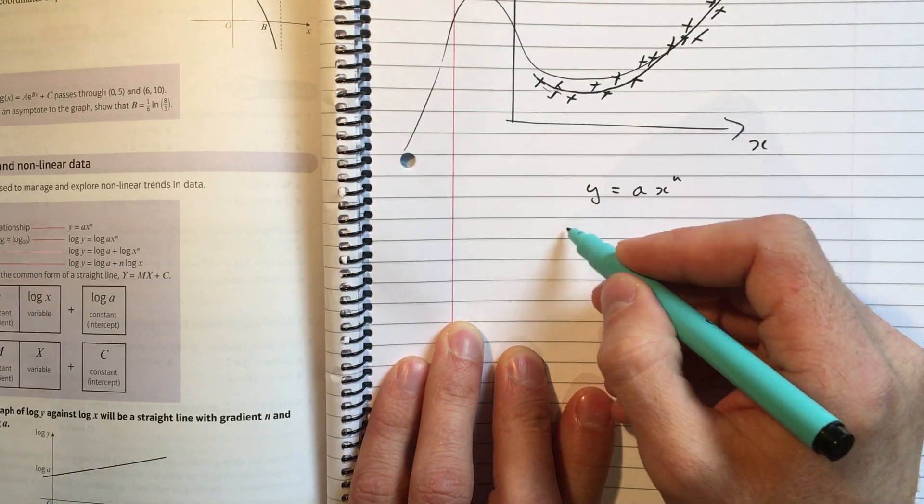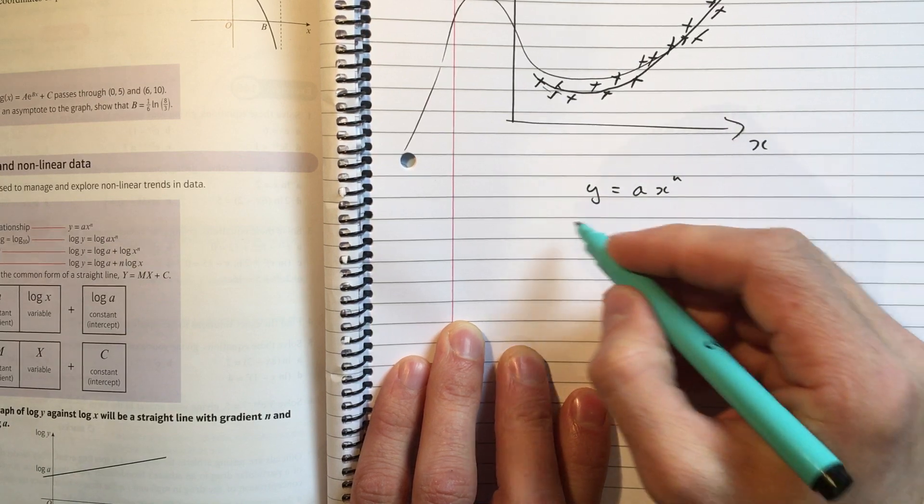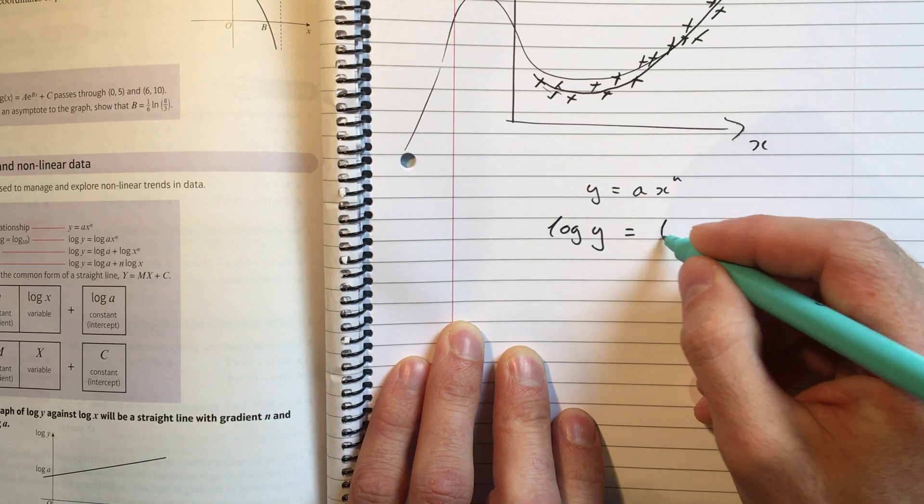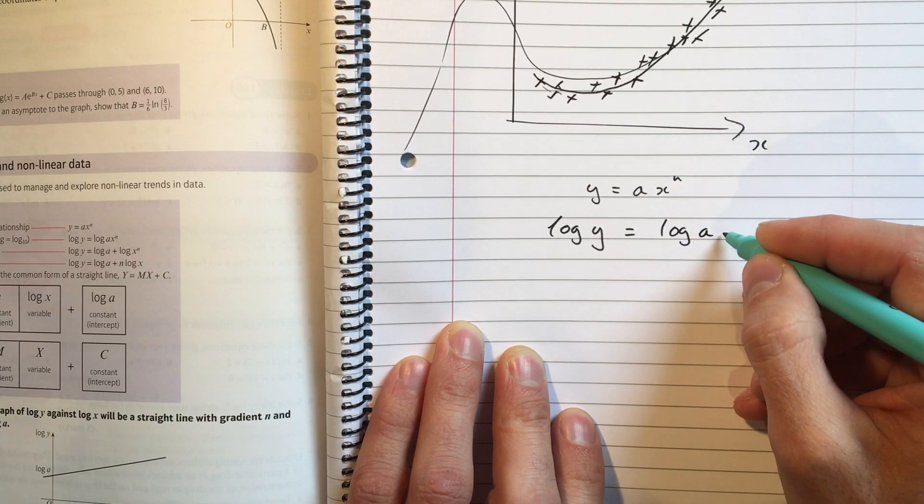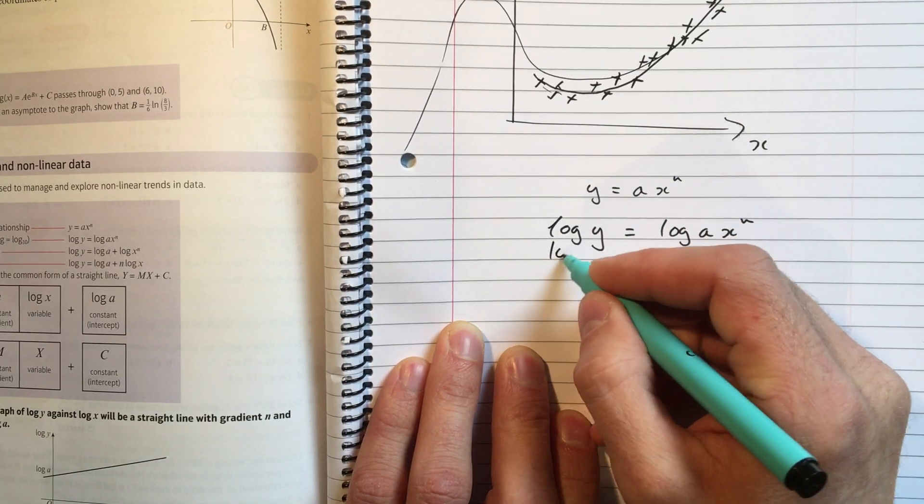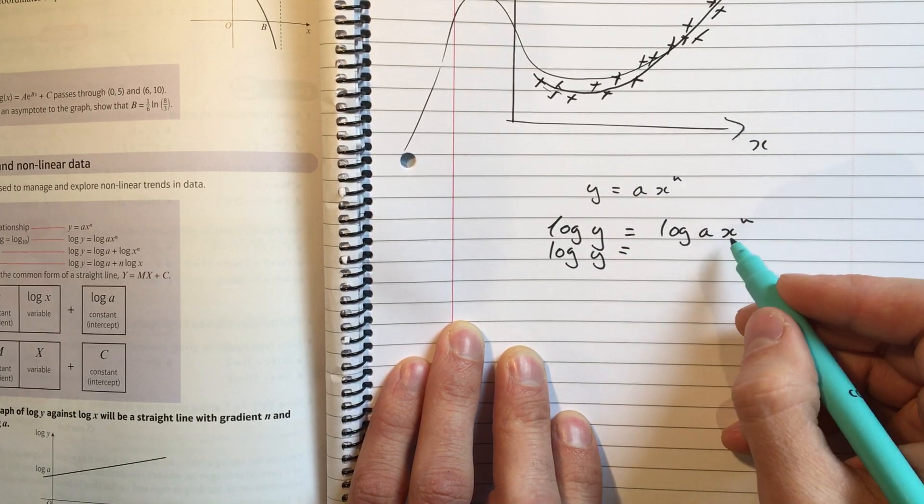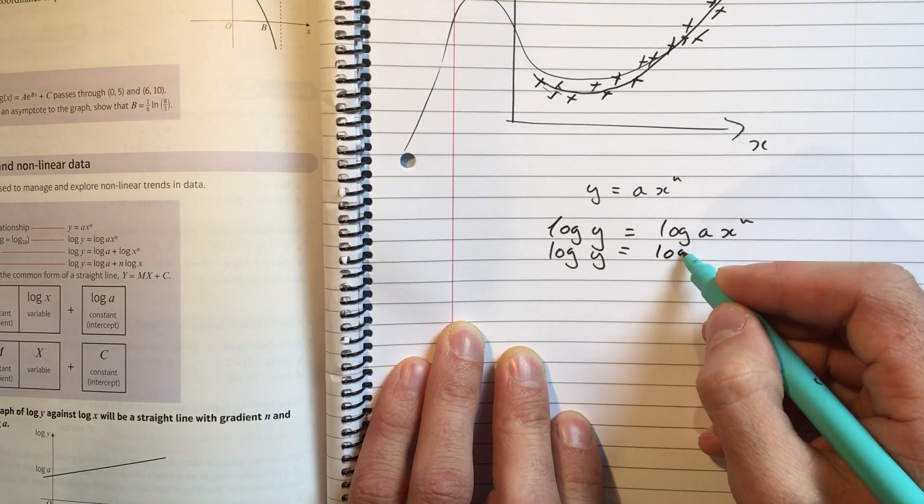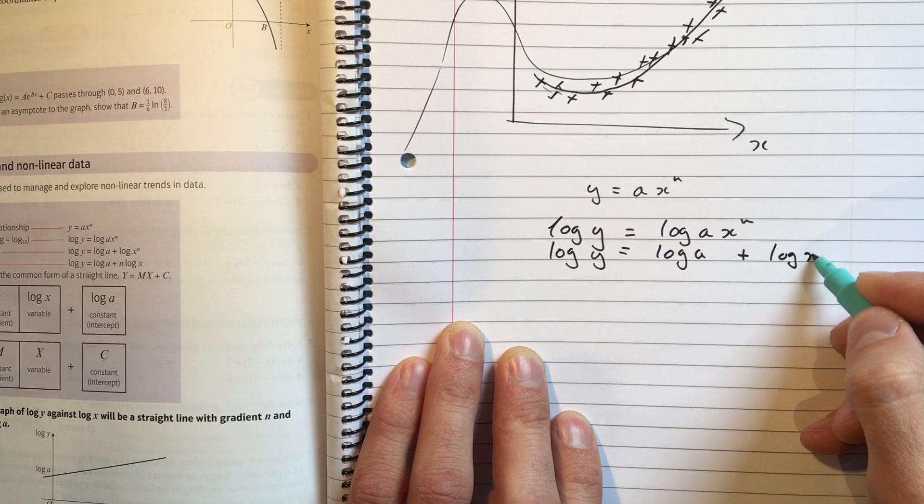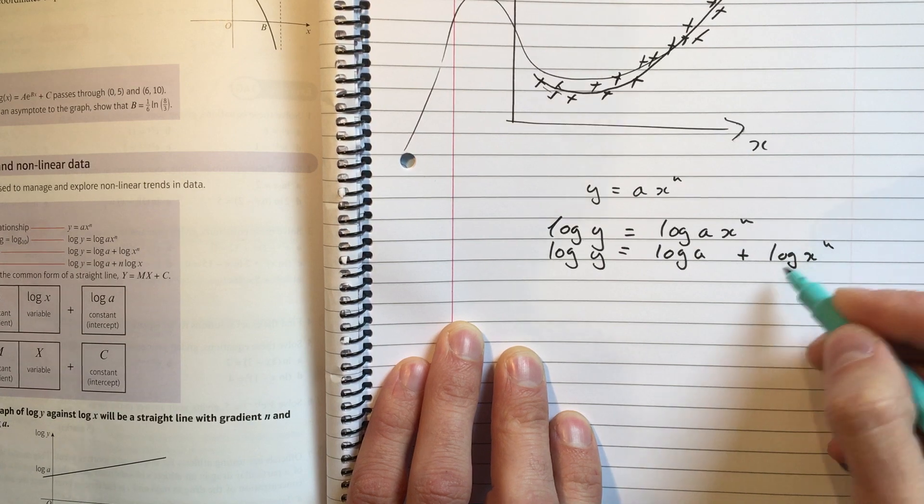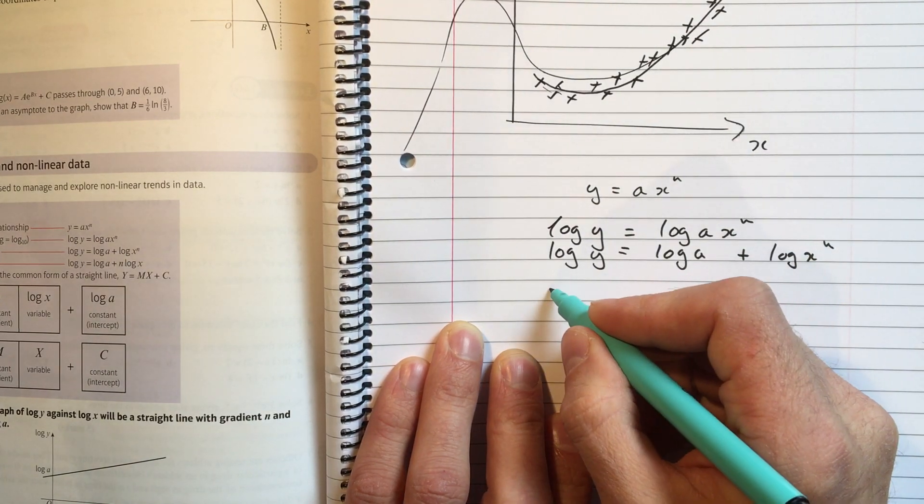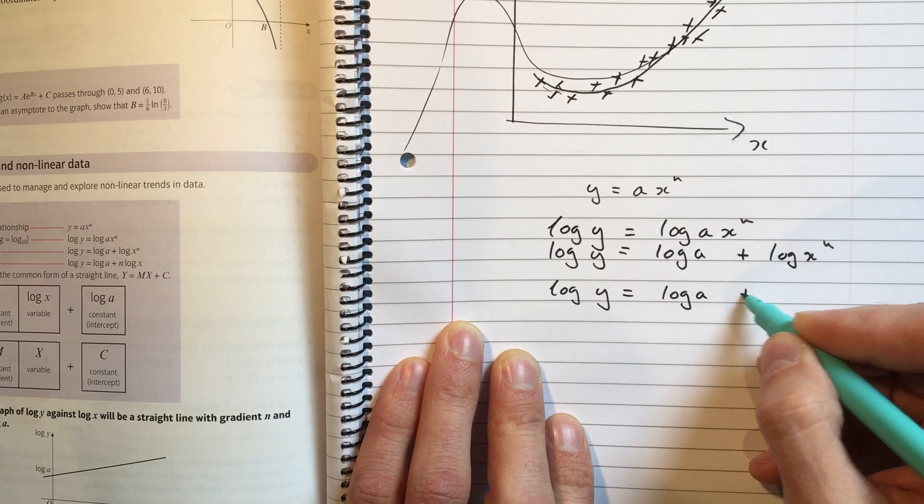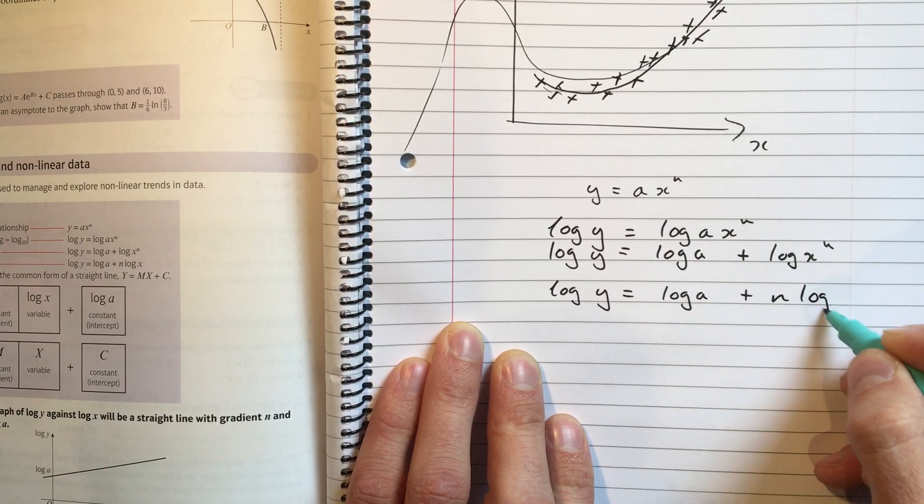If we suspect that this data is close to a polynomial type thing, a cubic or a quadratic or something like that, then we would do this. We'd say, well, we think this is the relationship. If that's the relationship, I can take log on both sides. It doesn't matter what base, but usually we take log base 10 here. So I'm just leaving it as log without writing a base in. That means log base 10. Now I'll take the multiplication rule, and I'll use the power rule on this bit here.